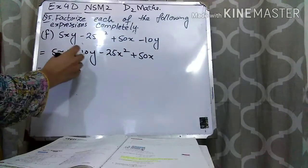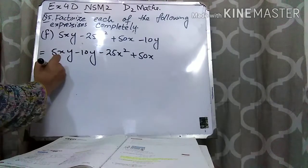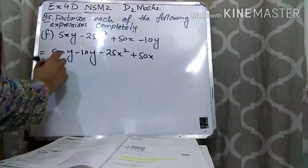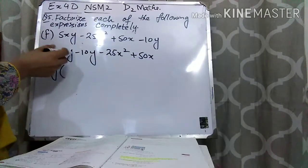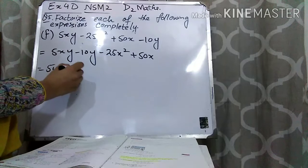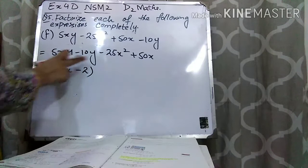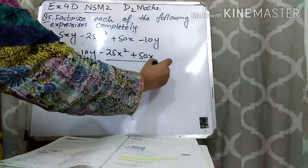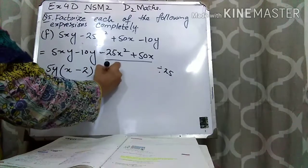Write the first and last term together. From the first two terms, 5 and y are both common, so take 5y common. From the first term, 5y divided gives just x left. 5 times 2 is 10, so write x minus 2. You have taken y common, so do not write y again. From the last two terms, 25 and 50 are both divisible by 25, so take minus 25 common. The x variable is also present in both those terms, so take x common too.